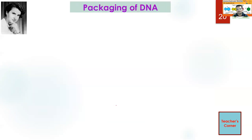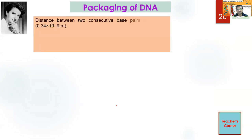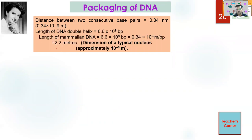Now there is a big question. When you talk about the size of the nucleus, it is on the order of 10⁻⁶ meters. But when we talk about packaging, you should understand the basic mathematics. The distance between two consecutive base pairs is around 0.34 nanometers, or 3.4 × 10⁻¹⁰ meters, and there are 6.6 × 10⁹ base pairs. Effectively, the length of mammalian DNA is around 2.25 meters, whereas the nucleus dimension is 10⁻⁶ meters. How is it possible that this amount of DNA is packed inside?